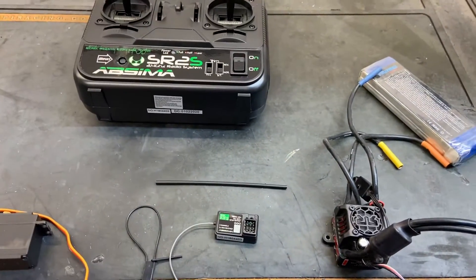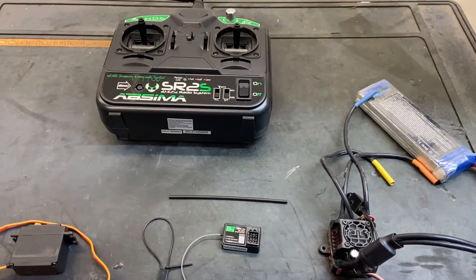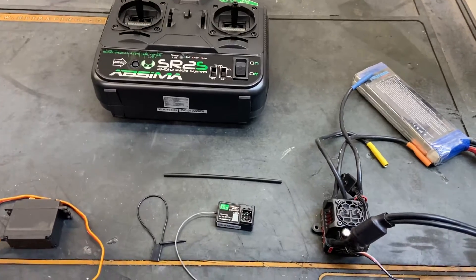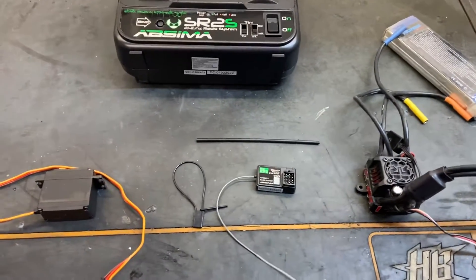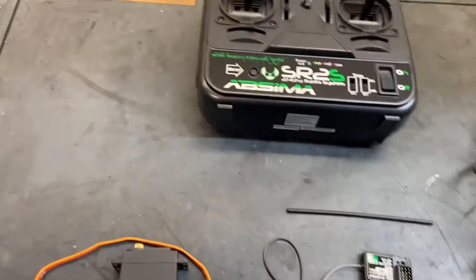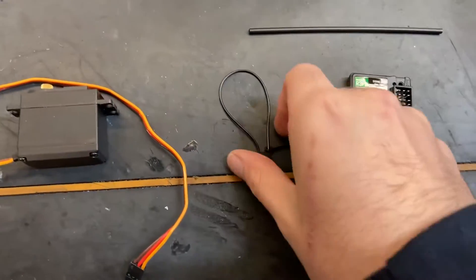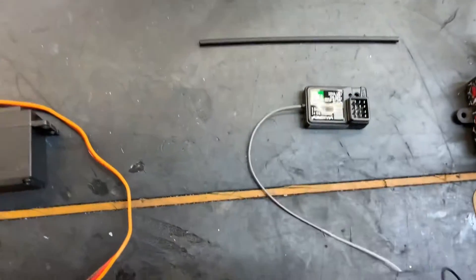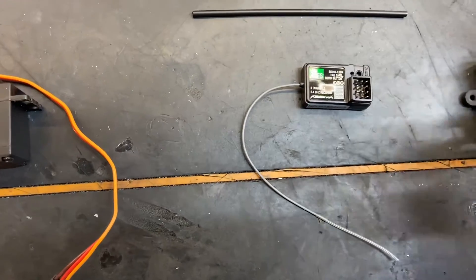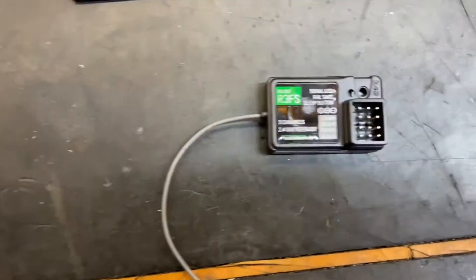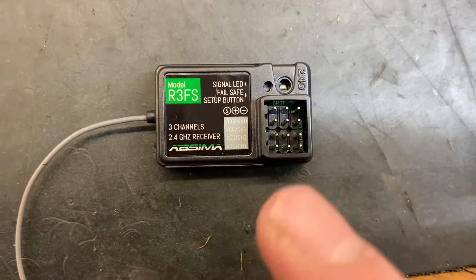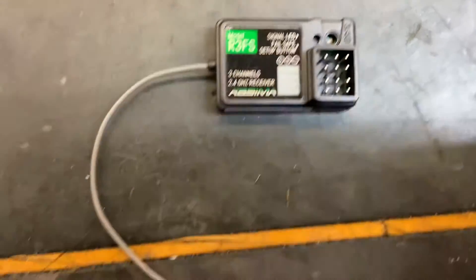Hi there, we're going to show you how to bind and wire up an Absima SR2S radio set. First of all, we have the bind key which comes in the same packet as the receiver. That needs to go in the bind port, the one that will bind.